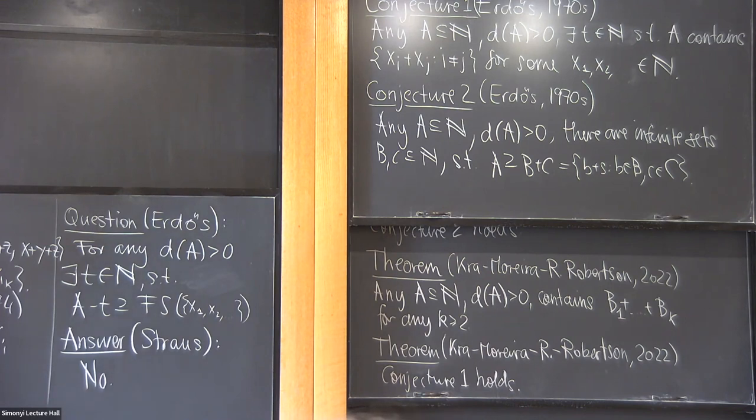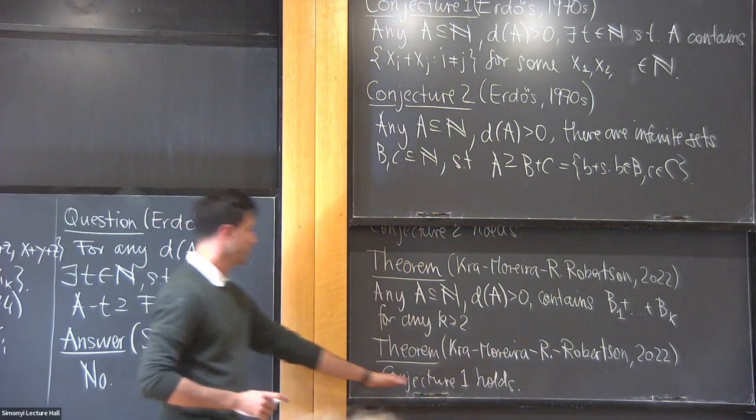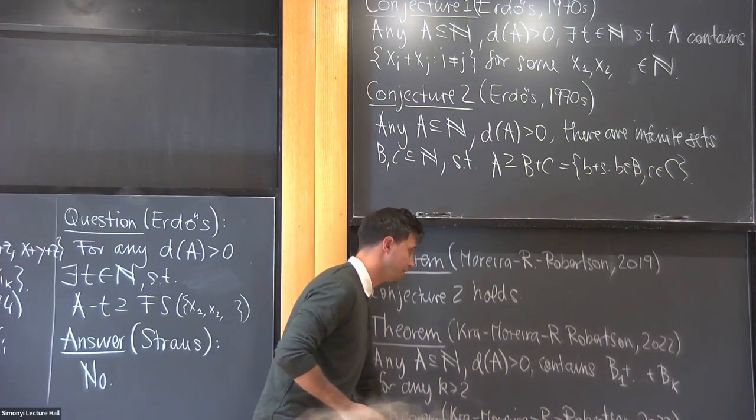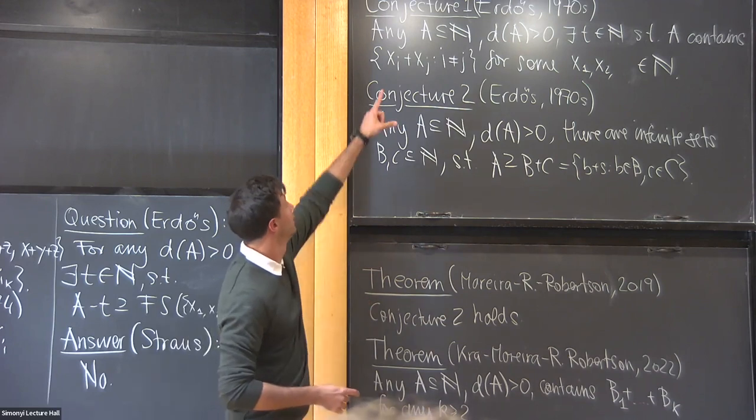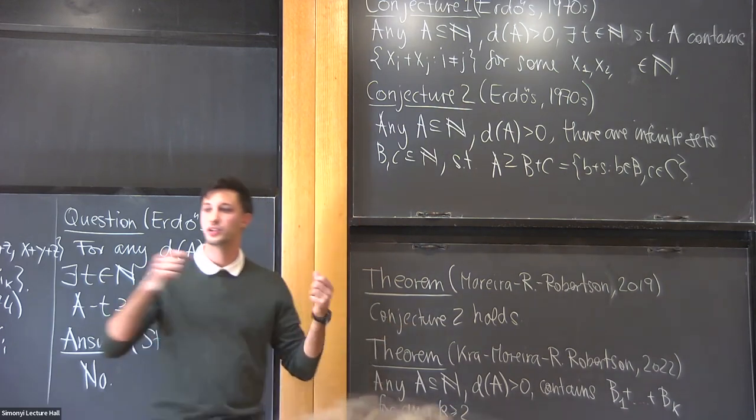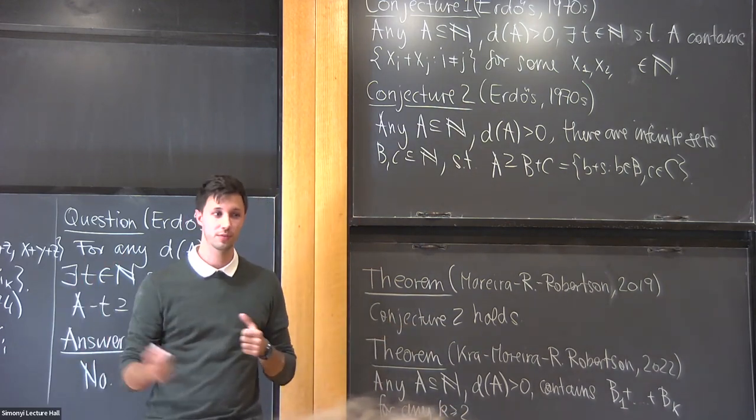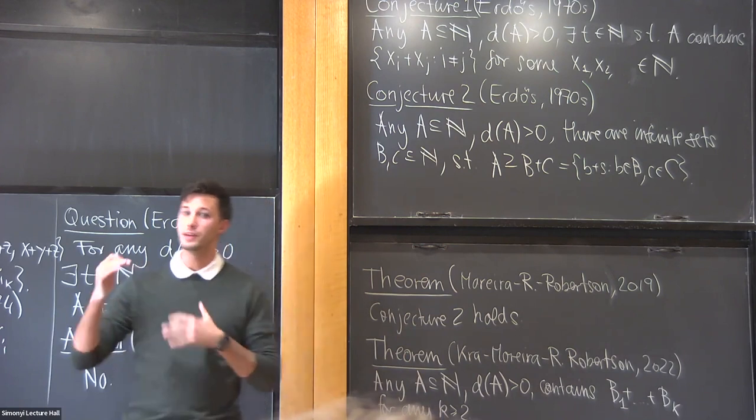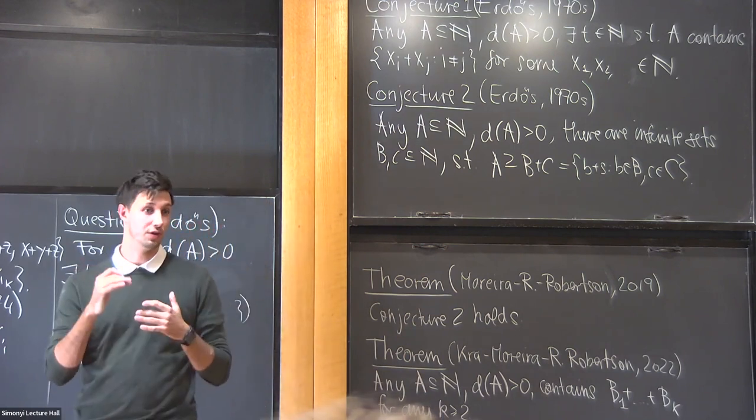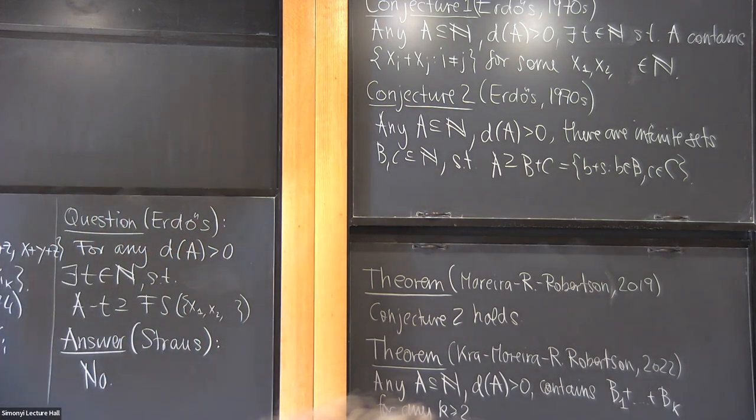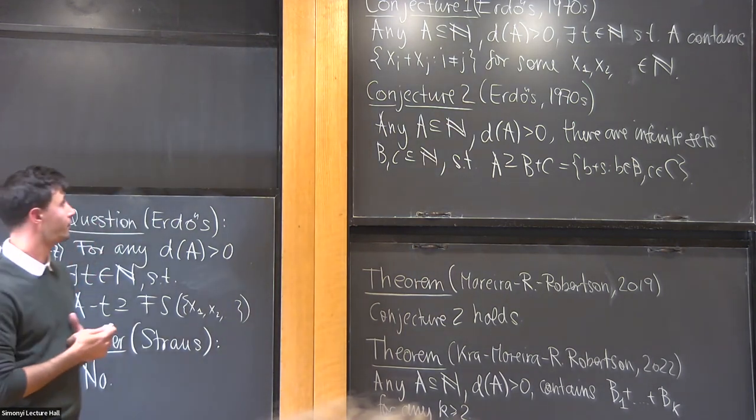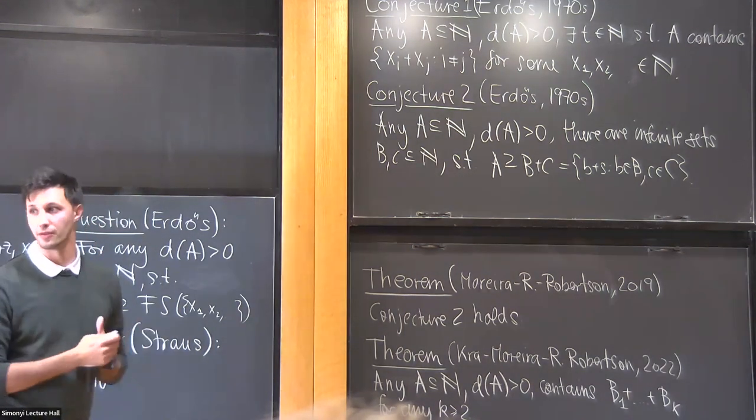Okay, so I've pretty much exhausted my time. Let me just say that the tools that we use come from topological dynamics and ergodic theory. So first we translate, say conjecture one, to a question about orbits in dynamical systems with certain properties. And then we can use the structure theory of dynamical systems to study these kind of arrangements. And yeah, unfortunately I don't have more time to say anything about that, but thank you very much.